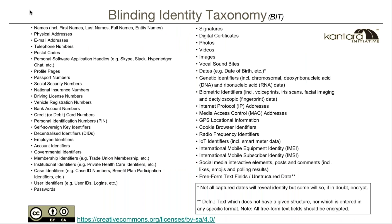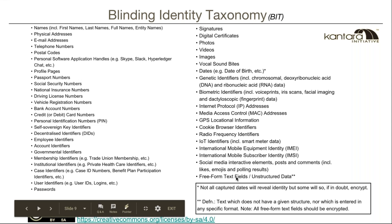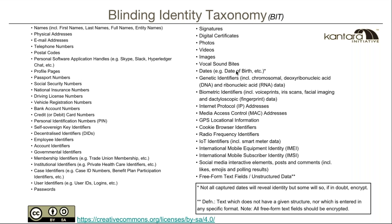This is the Blinding Identity Taxonomy — there are 44 elements in this taxonomy. It's now being housed by Kantara Initiative, though it hasn't been formally stamped yet for global use; it's in their consent and information working group. We're going through it rigorously to try and implement it as a global standard. The interesting elements to point out are free-form text fields / unstructured data, and dates — such as date of birth.